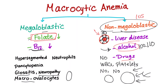So, for hematology's sake, stop drinking excessively. Here are the main differences between megaloblastic and non-megaloblastic. I'll see you in the next video when we talk about normocytic anemia — big time for the boards. Take care, study hard, and be fine.